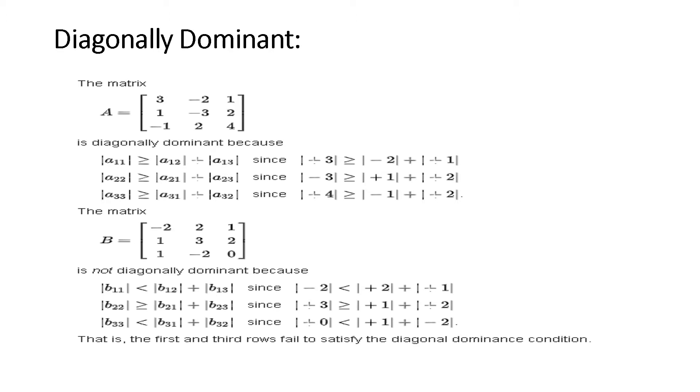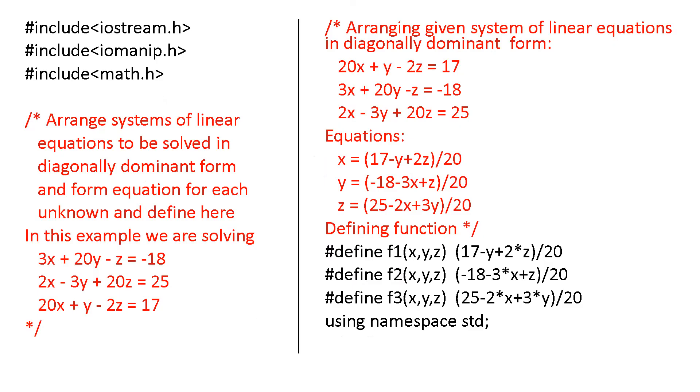First find whether diagonally dominant. Now, I am going to the program. This is a program, hash include iostream, hash include iomanip and hash include math.h. The statements in red, they are the common statements. Just for identification, I change the color.